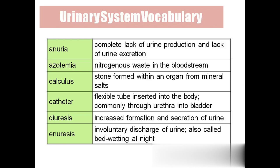Diuresis: diuretics are drugs given for increased blood pressure; they increase urine output, which decreases blood volume and therefore lowers blood pressure. Enuresis means involuntary discharge of urine — also called bed wetting — and usually occurs in elderly people or children.